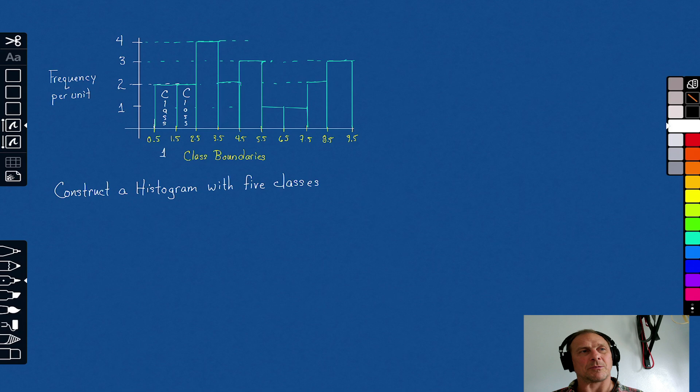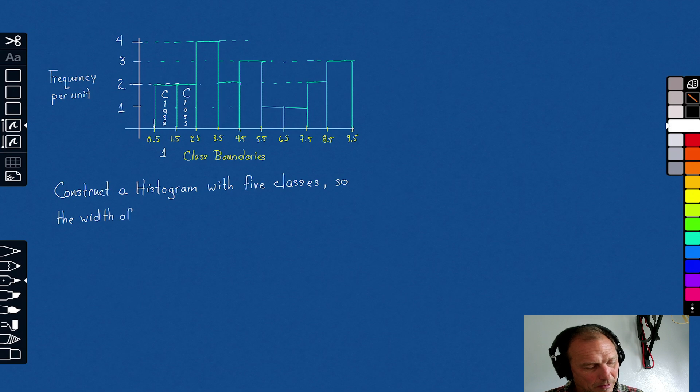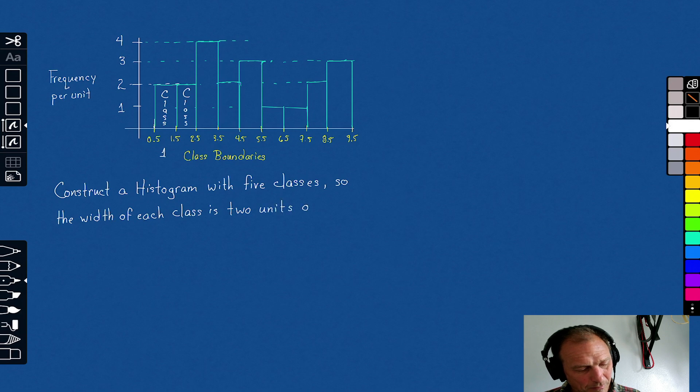And I'm going to use some more terminology. With five classes, i.e., so the width of each class is two units, two units of data.